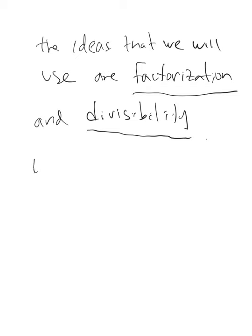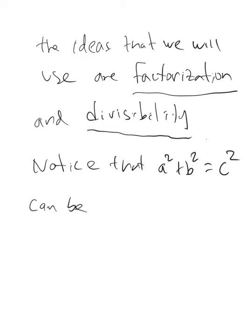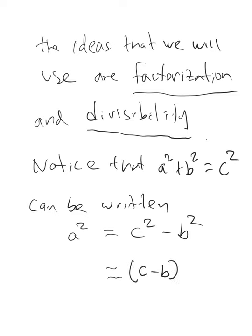Notice that a² + b² = c² can be rewritten as a² = c² - b². The right-hand side is now a difference of squares. So c² - b² can be written as (c - b)(c + b). As you'll see, this is actually very helpful.